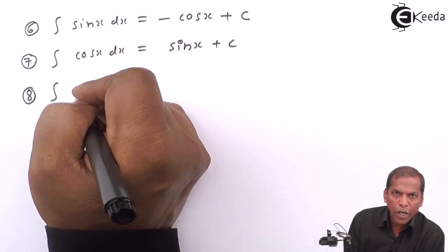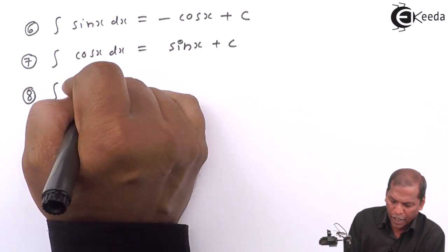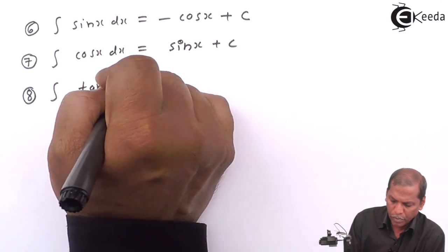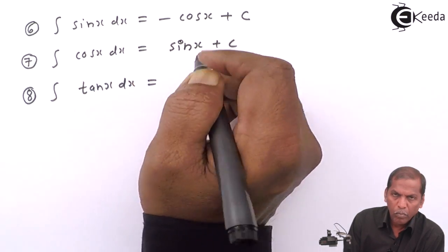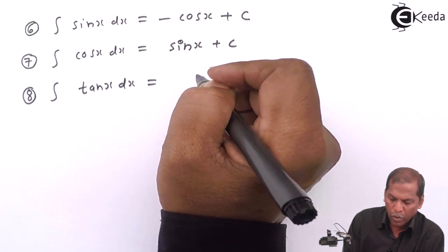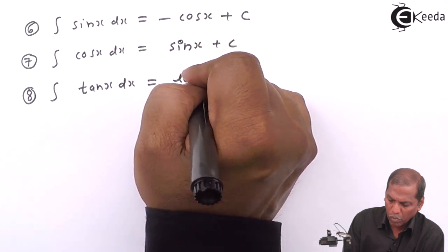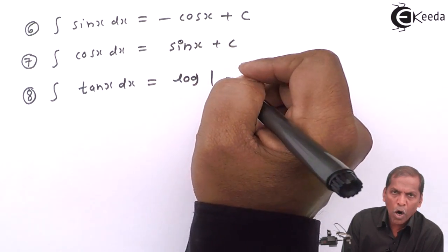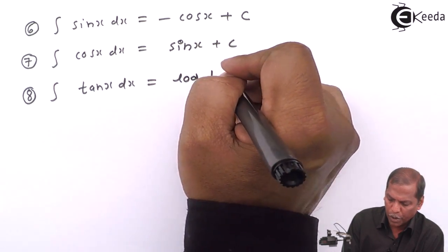Seventh formula: integral cos x dx is equal to sin x plus c. Eighth formula: integral tan x dx is equal to log mod sec x plus c.